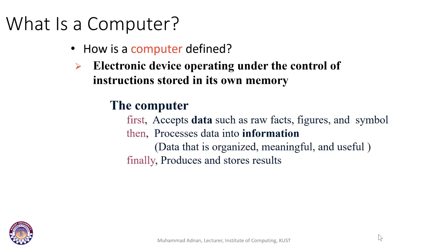For permanent storage you use devices like SSDs — solid state drives — or hard disks. At an abstract level, there are three steps that define how a computer processes information. First, the computer accepts data such as raw facts, figures, and symbols. Then it processes data into information — organizes it, makes it meaningful and useful. For example, an unsorted list of numbers is data; after sorting it ascending, it becomes information. You can also perform spell checking and grammar checking on a document using software like Microsoft Word.